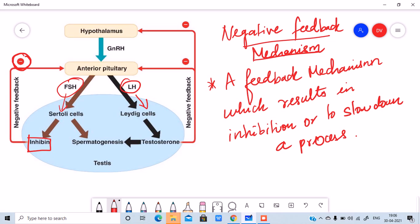That inhibin will go and signal the anterior pituitary to stop producing FSH. Do not produce FSH anymore because the Sertoli cells already receive sufficient nutrition to make enough sperms. So stop producing FSH. That signal goes to anterior pituitary and it will stop producing FSH. What is inhibited here? The production of FSH is inhibited. That is the first negative mechanism.